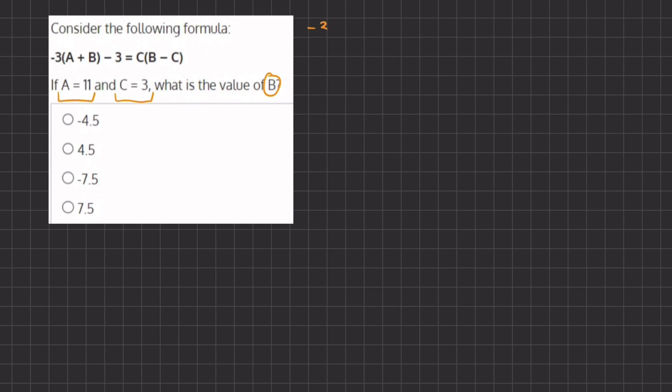So here we have negative 3, and instead of a I'm going to write 11 plus b minus 3 equals c which is 3 parentheses b minus 3 again.